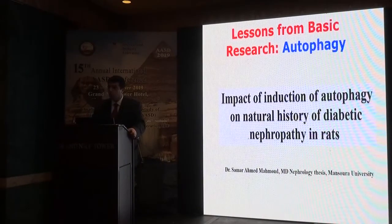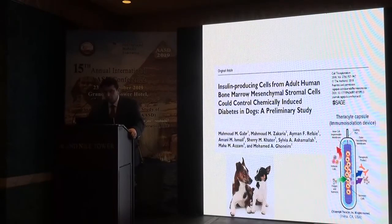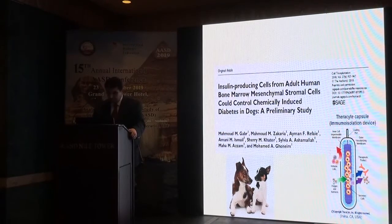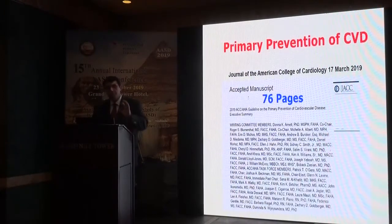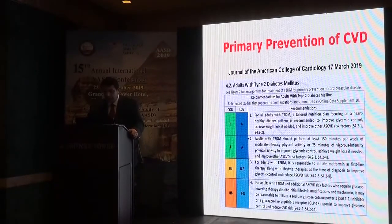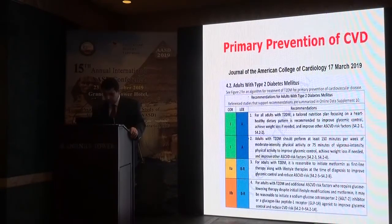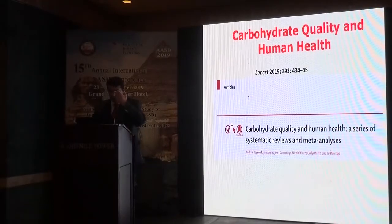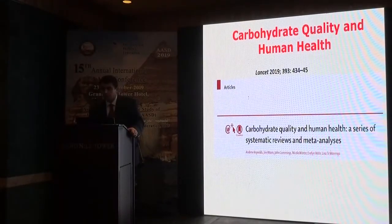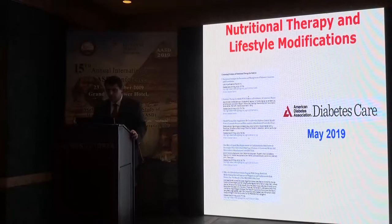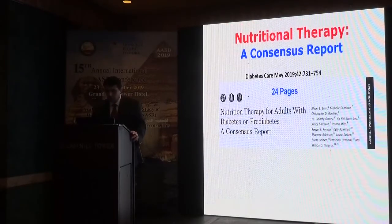Regarding autophagy: it is very important and has been studied in animal models using insulin-producing cells from bone marrow and mesenchymal stem cells that may help treat diabetes mellitus. This represents an important avenue toward primary prevention. The latest European guidelines recommend exercise, metformin, SGLT2 inhibitors, and GLP-1 agonists as having a great role. Carbohydrate quality is important, with high-fiber content preferred, as mentioned in Diabetes Care, May 2019.